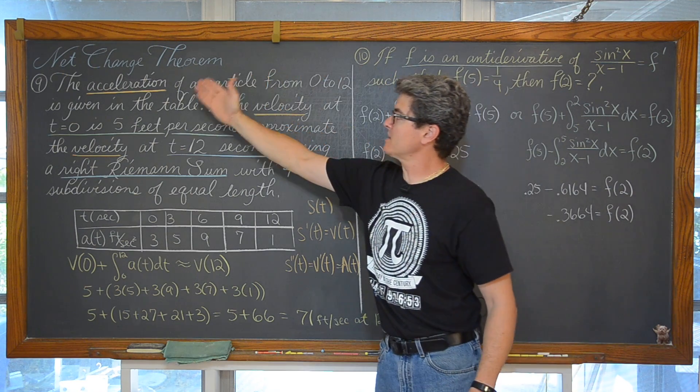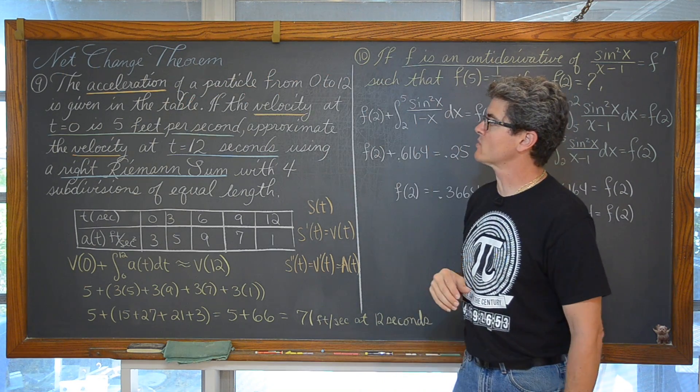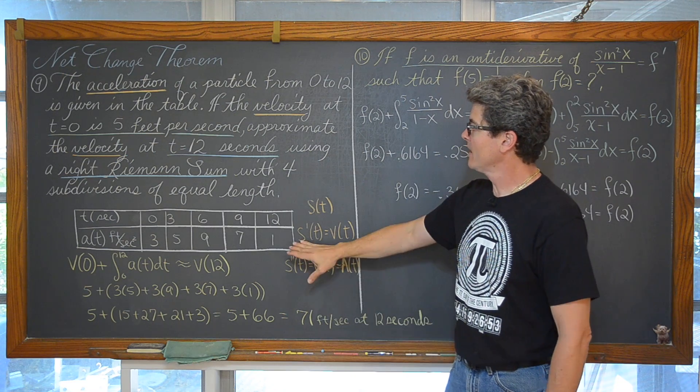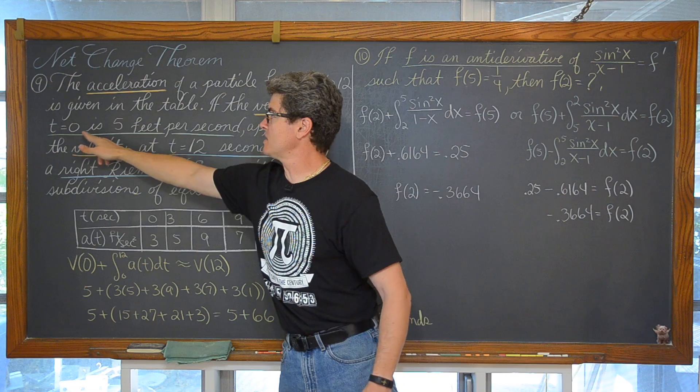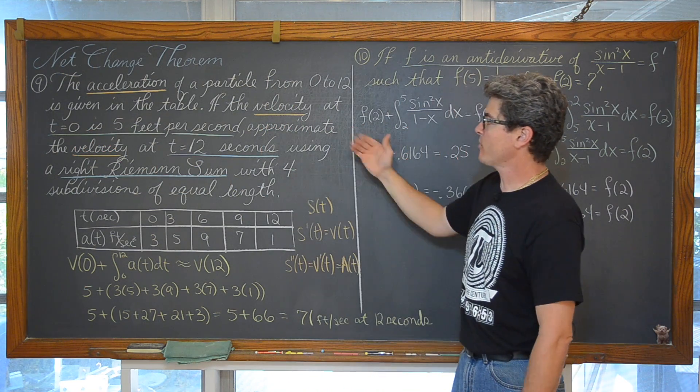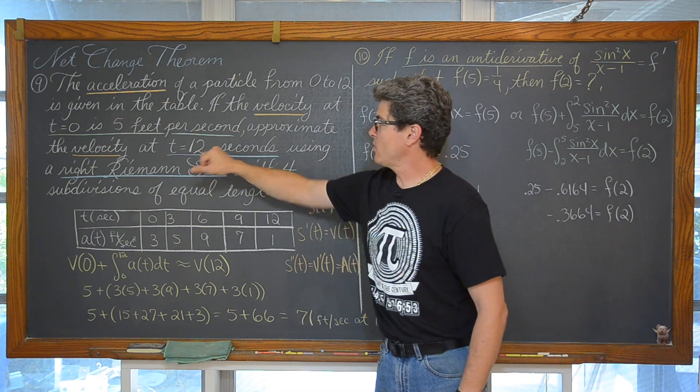So we had in this problem the acceleration of a particle from 0 to 12 is given in the table. And if the velocity at time equals 0 is equal to 5 feet per second, approximate the velocity at 12 seconds.